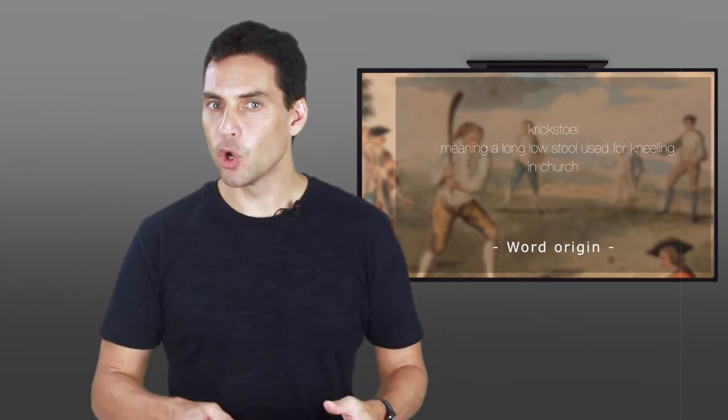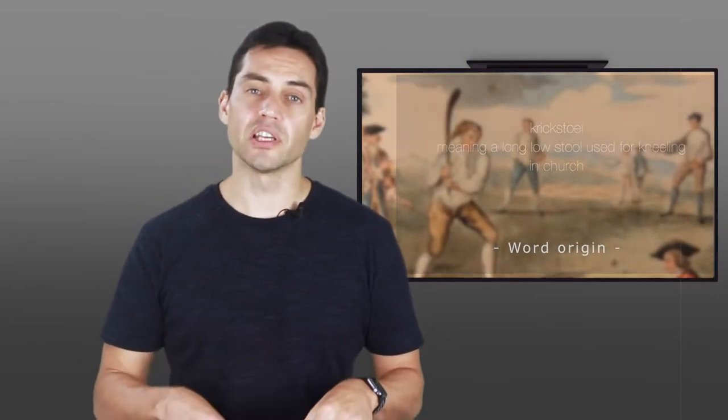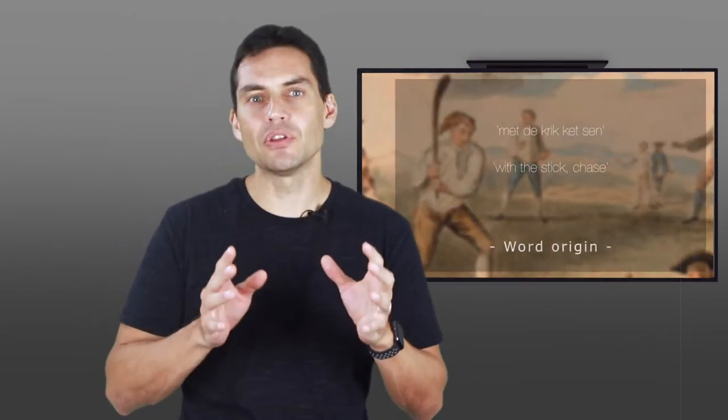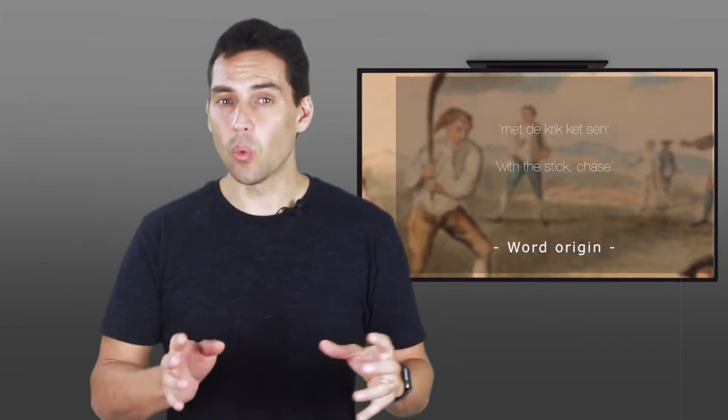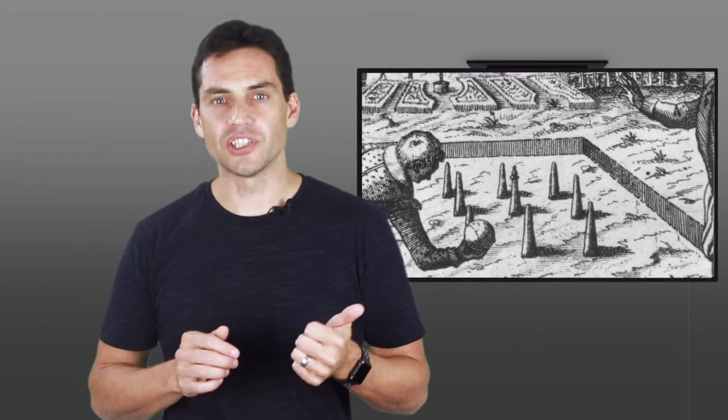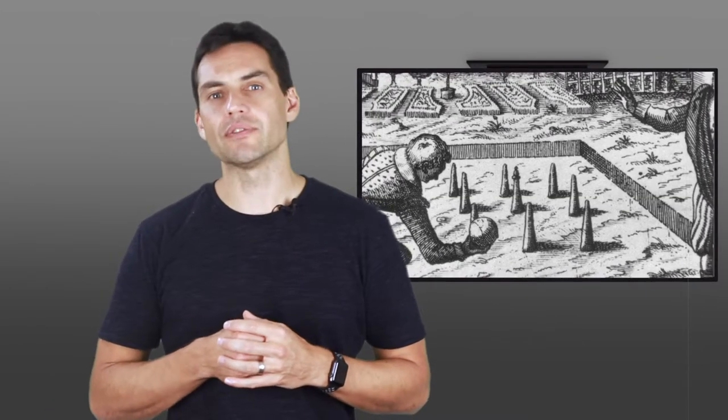And the crickstool has some resemblance to the long low wicket and two stumps used in early cricket. One more obscure possible source was proposed by European language expert Heine Gilmeister of Bonn University. He proposed that the name cricket comes from the Middle Dutch phrase for hockey, 'met de crick ket sen', which means 'with the stick chase'. It's quite likely that cricket was devised originally by children and probably survived for many generations as essentially a children's game, with adult participation unknown before the early 17th century.